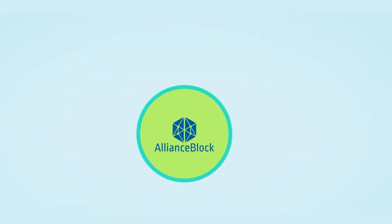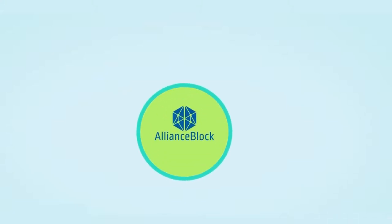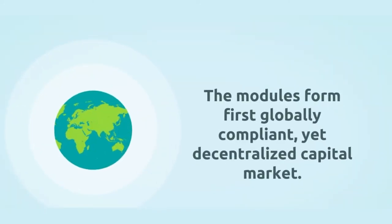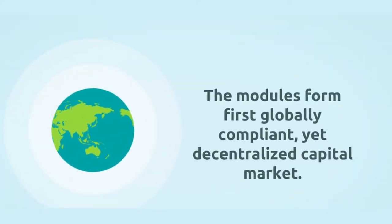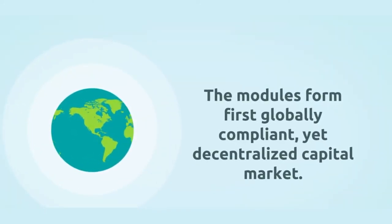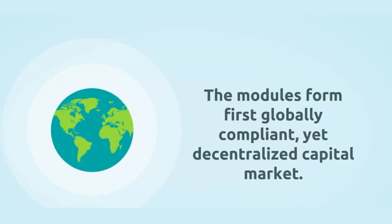What is AllianceBlock? AllianceBlock is a blockchain agnostic layer 2 protocol consisted of multiple products called modules. The modules form the first globally compliant yet decentralized capital market.